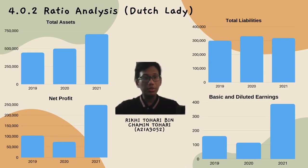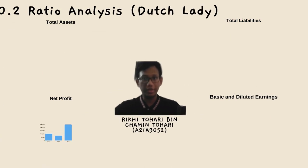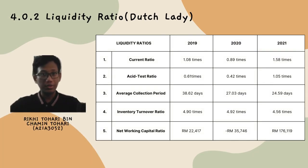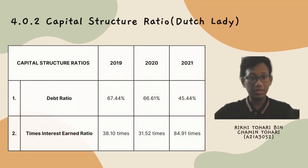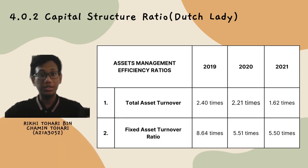Next, I am going to talk about the ratio analysis for Dutch Lady. Firstly, I will show the total assets, total liabilities, net profit and basic and diluted earnings infographic. Next is the liquidity ratio for 2019 to 2021, which includes current ratio, acid test ratio, average collection period, inventory turnover ratio, and net working capital ratio. Next is the capital structure ratio which has debt ratio and times interest earned ratio. Another one is asset management efficiency ratio which has total asset turnover and fixed asset turnover ratio.